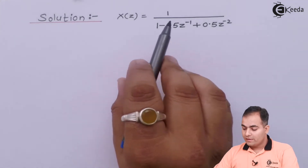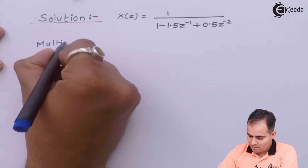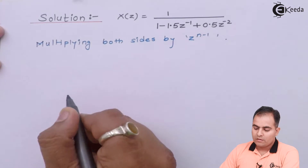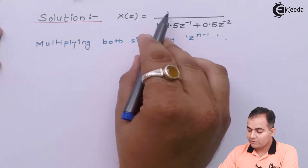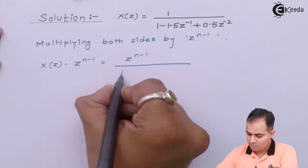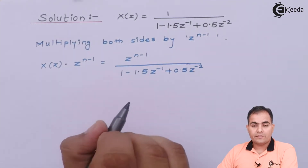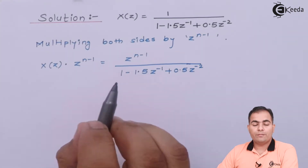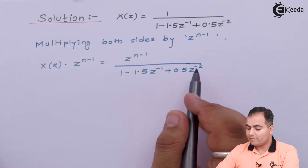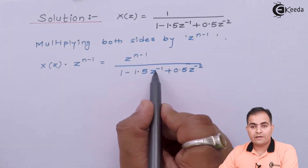First, we multiply both sides by Z^(n−1). The residue theorem requires a positive power of Z, but here we have negative powers. To make them positive, multiply numerator and denominator by Z², so all negative powers in the denominator become positive.